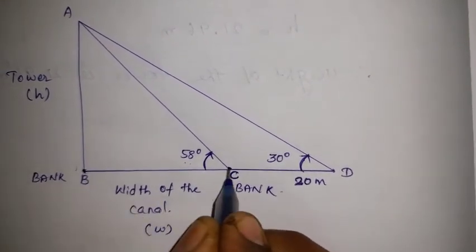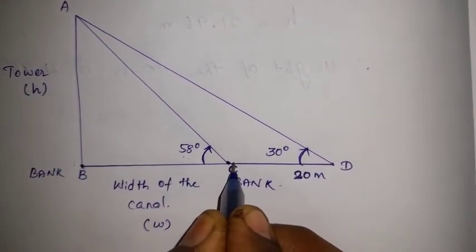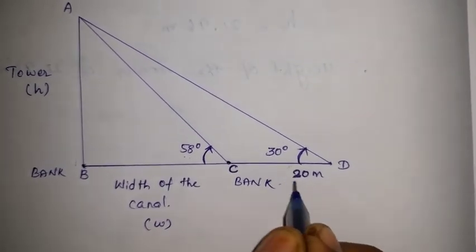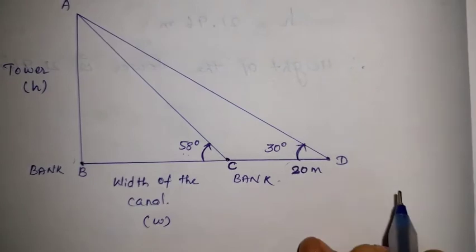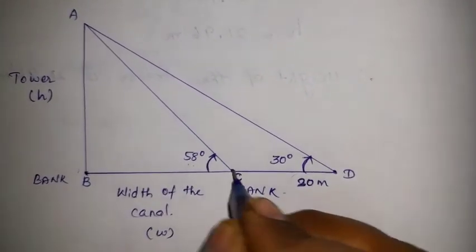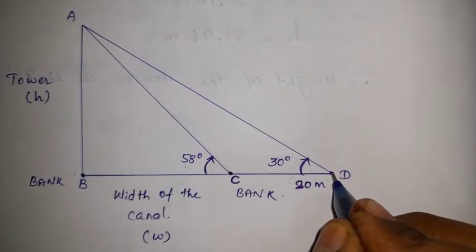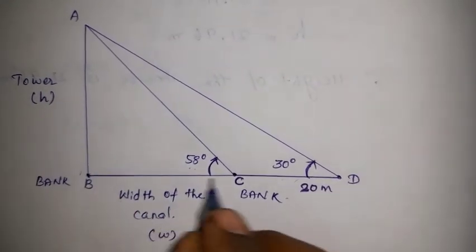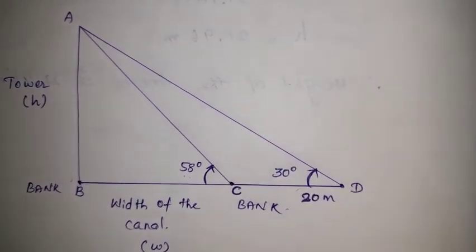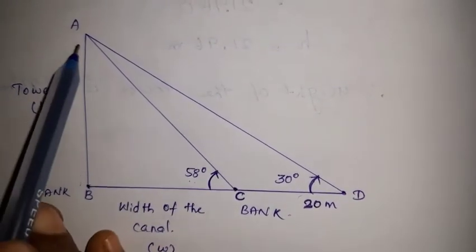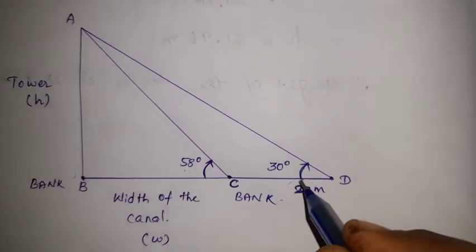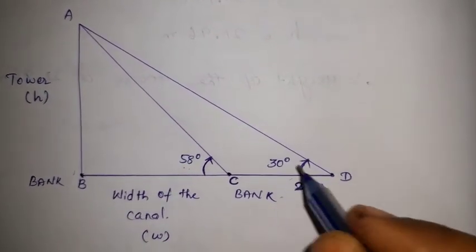BC is a straight line. Point D is 20 meters further along from C, so the tower, the point D is 20 meters along the straight line. From point D, the angle of elevation of the top of the tower is 30 degrees.